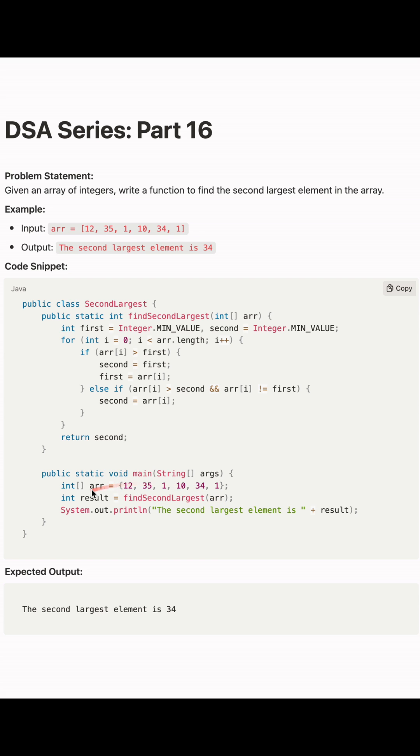findSecondLargest, and we pass the array here and then print this. The expected output is: the second largest element is 34.